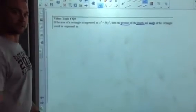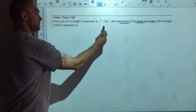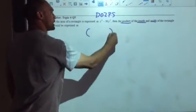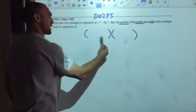I need to break it down into its factors. I have two terms, so I'm going to use DO2PS. I know I'm going to have two factors: length and width.